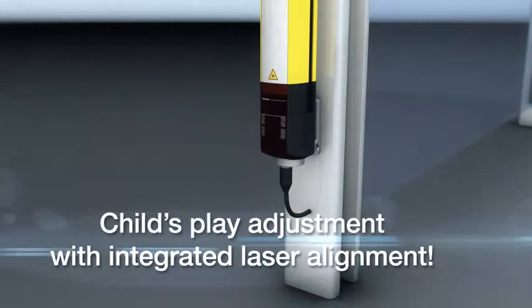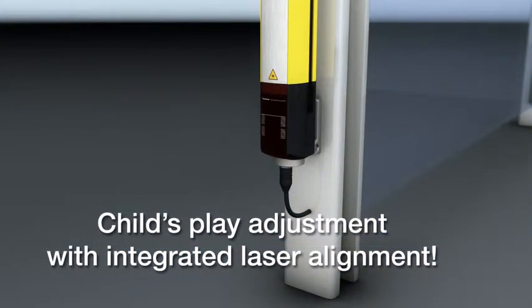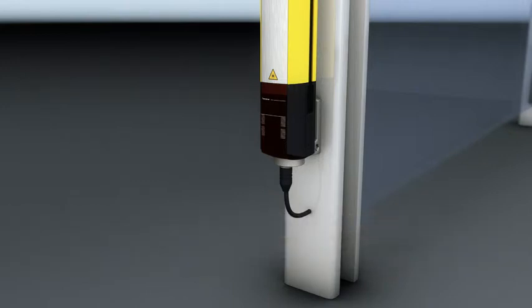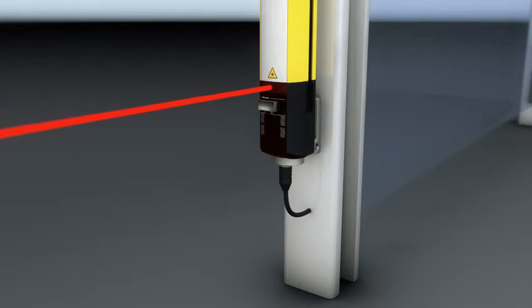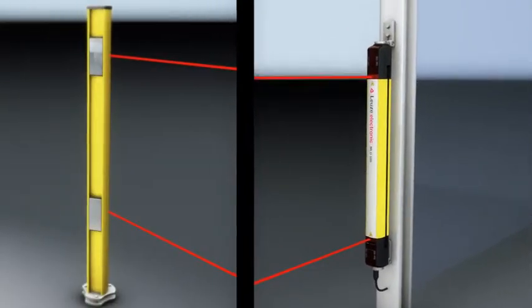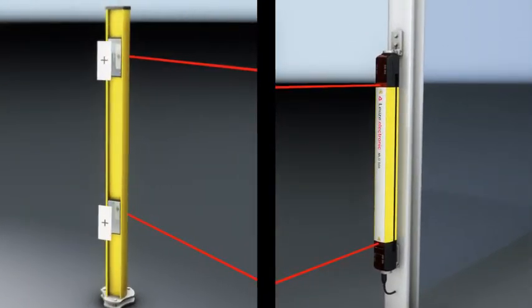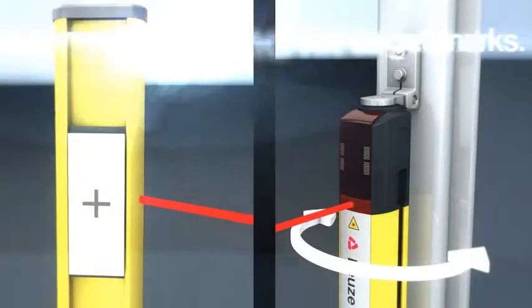Or the integrated laser alignment aid. Simply activate it with a magnet key, and direct the laser beam onto the template at the deflecting mirror column, until the target has been hit.